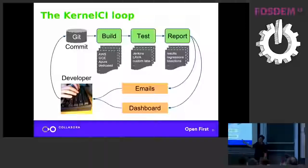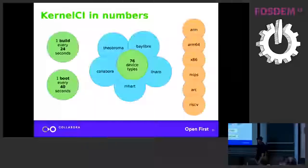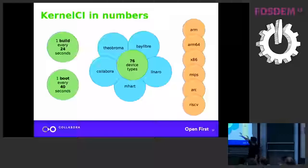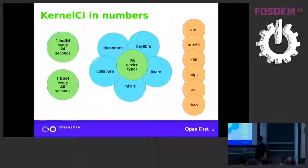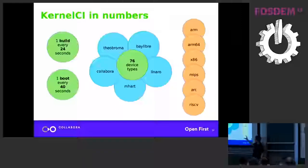There's a web dashboard on kernelci.org, and we're hoping to develop other kinds of dashboards as well because the current one is aging a bit. In numbers, we're building and booting millions of kernels. On average there's a new kernel being built every 24 seconds, and one board is booted every 40 seconds. We have 76 device types - sometimes we have multiple of the same device, like three Raspberry Pis, but that counts as one type. Those are the main labs, with some other smaller labs as well.